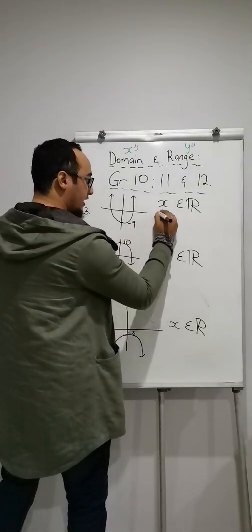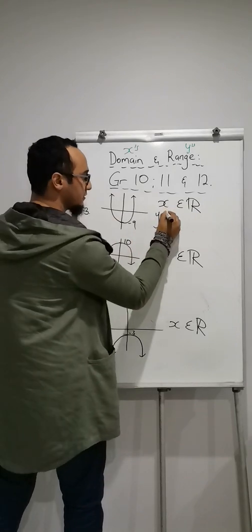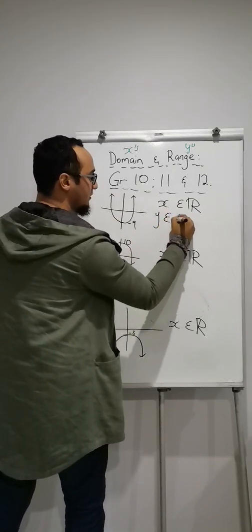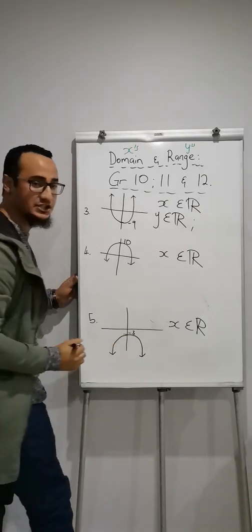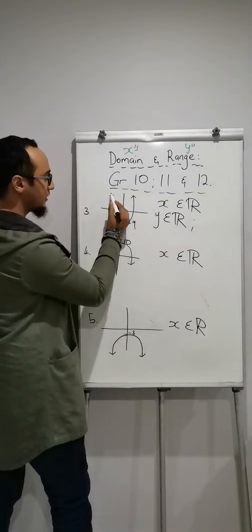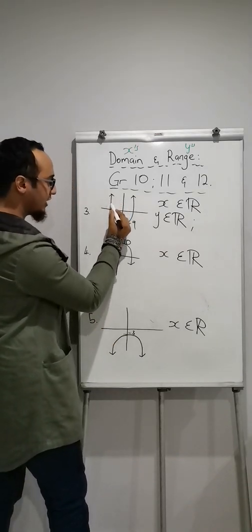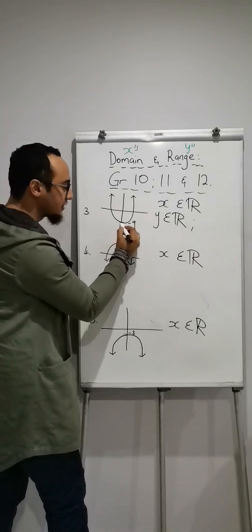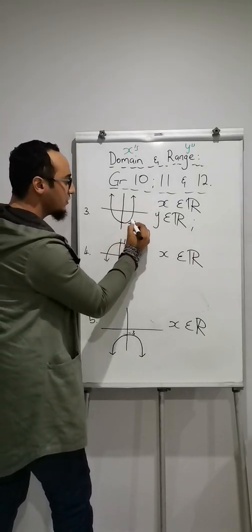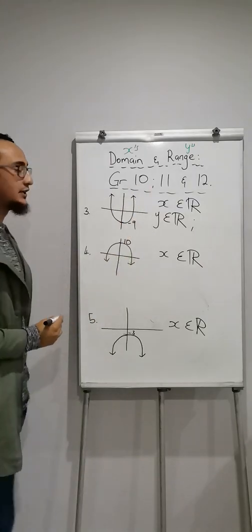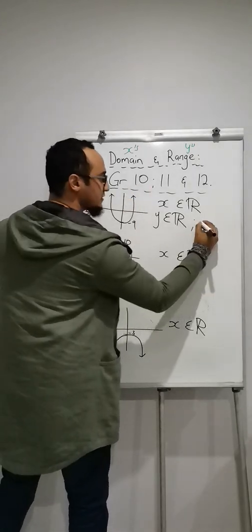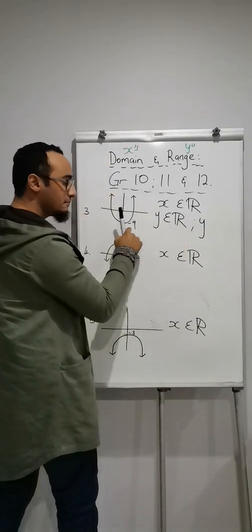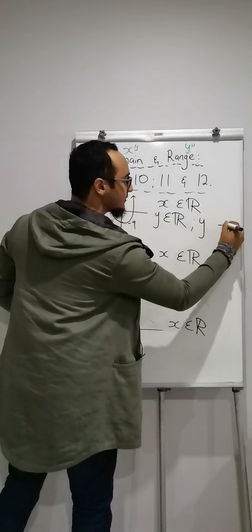So firstly, y with the ranges is y is the element of real numbers, but I need to have a restriction because the graph starts at the top, comes down until it reaches that negative 9 part. From there I go once again up over there. So firstly, I look at my y-axis. Y, what's the number I'm busy with? Negative 9.